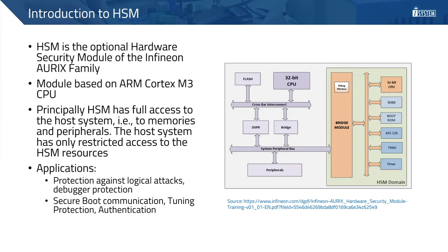Starting with a brief introduction of the AURIX HSM core — it's a 32-bit ARM Cortex-M3 processor with up to 100 MHz CPU speed. It's an optional hardware security module of the Infineon AURIX family. HSM is connected with the device via the SPB, which is the system peripheral bus. As a system on chip, HSM is a bus master on the SPB. The bridge module acts as a firewall so that HSM internal resources are protected from access by other masters. PFD flash of the HSM is shared with the device but can be protected via exclusive access from the Tri-Core and other masters.